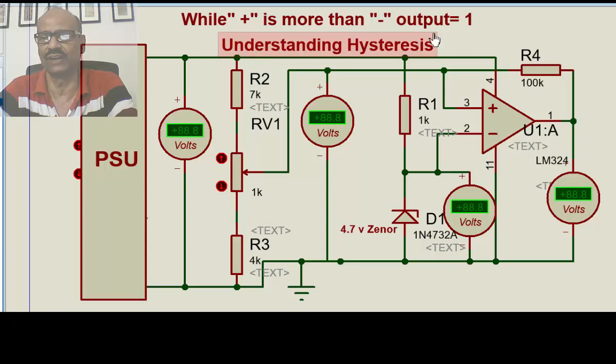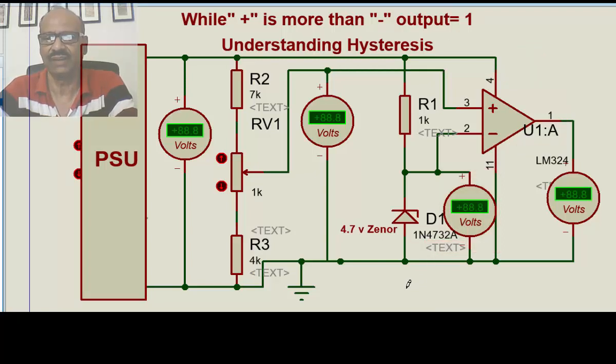The supply voltage could be 10 volt, 12 volt, 5 volt, whatever it is. So the output will be that. For the time being, let us now remove this. Now, this is a plain and simple comparator. This is kept fixed at 4.72 volts. Now, this positive is less than 4.72 volts. So, output is equal to 0.